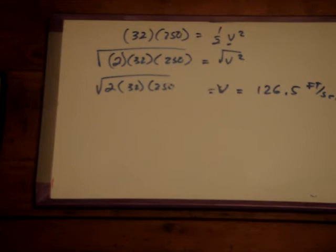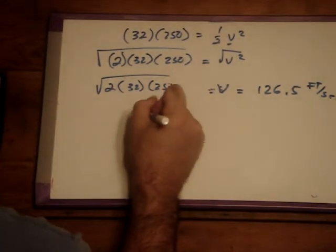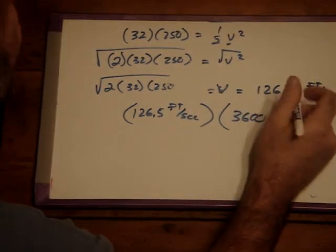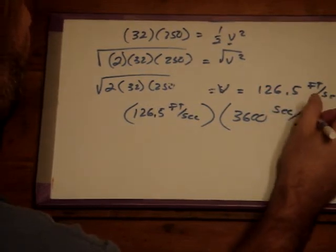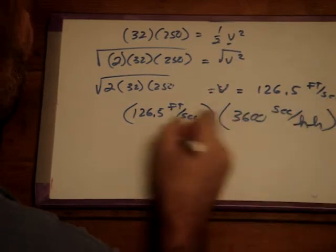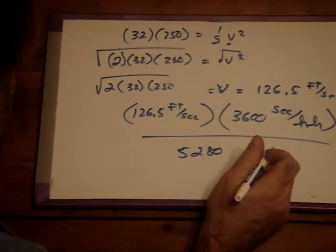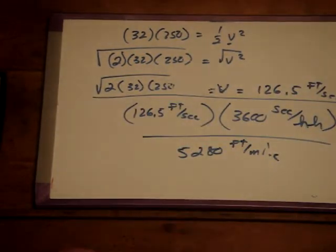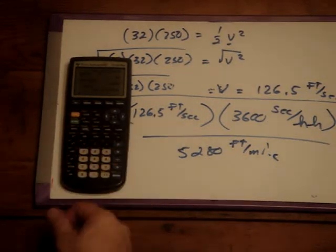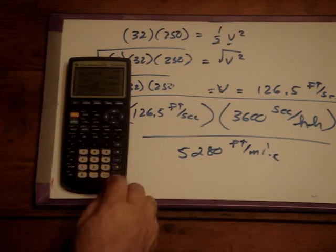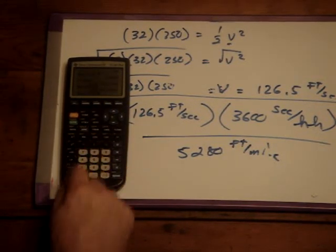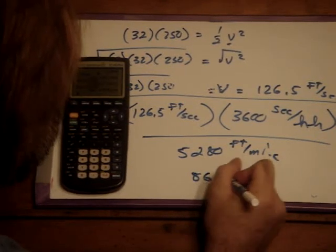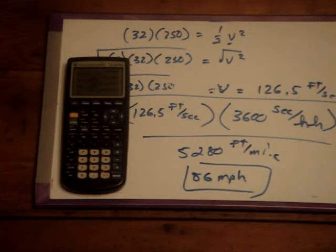But, let's put that in terms that we're more familiar with. So, that's 126.5 feet per second times 3600 seconds per hour divided by 5,280 feet per mile. And these units ought to work out here to give us miles per hour. So, 126.5 times 3600 divided by 5,280 feet in a mile. So, this is saying that we should be reaching a speed of 86 miles per hour with no energy loss due to friction.